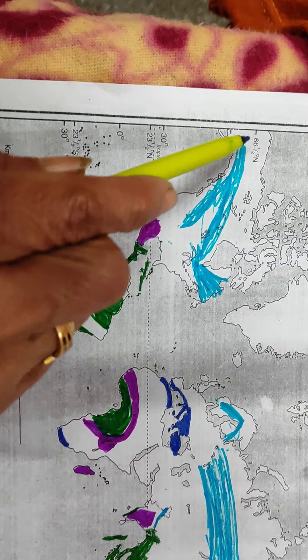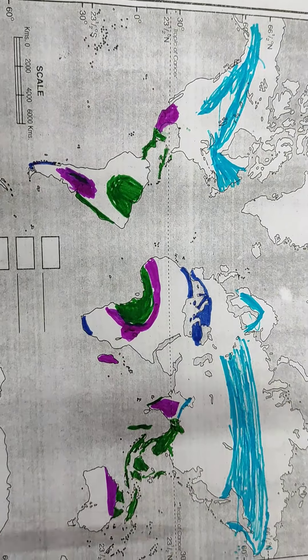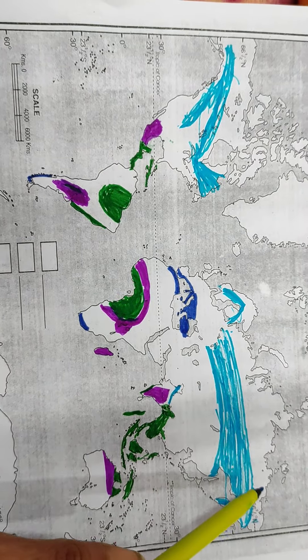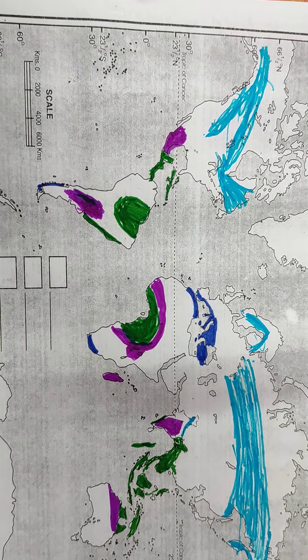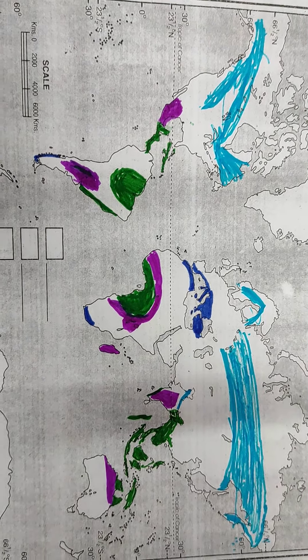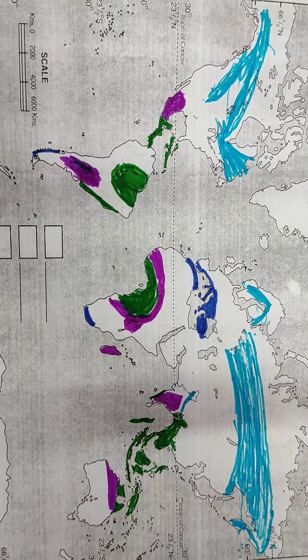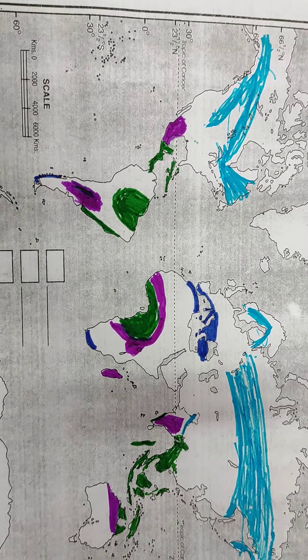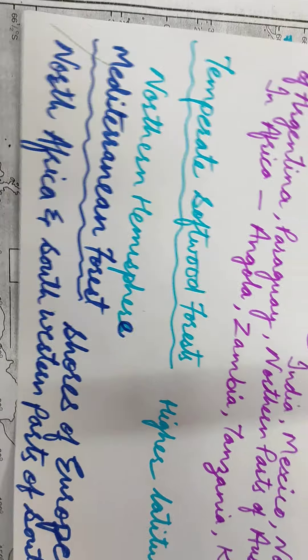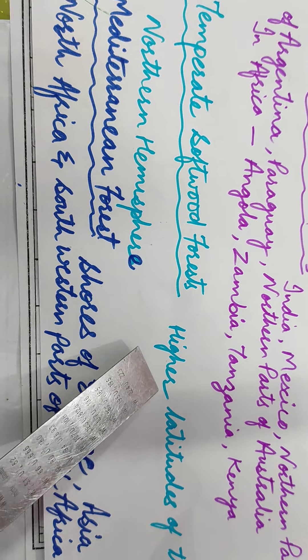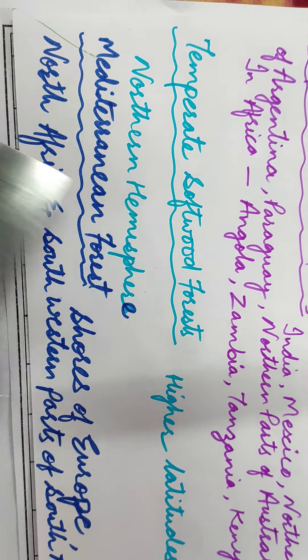Why these forests are called temperate softwood? Because the wood of these trees is very soft. The wood is very soft, that's why. Now last, temperate softwood forest I have told you - higher altitude of the northern hemisphere. Now our last is